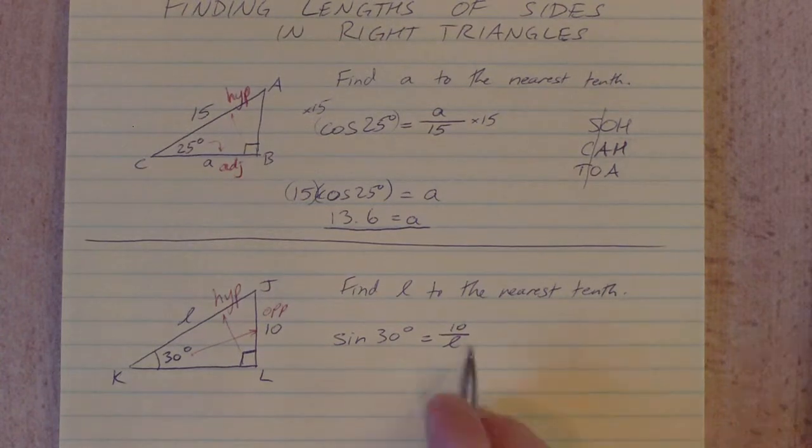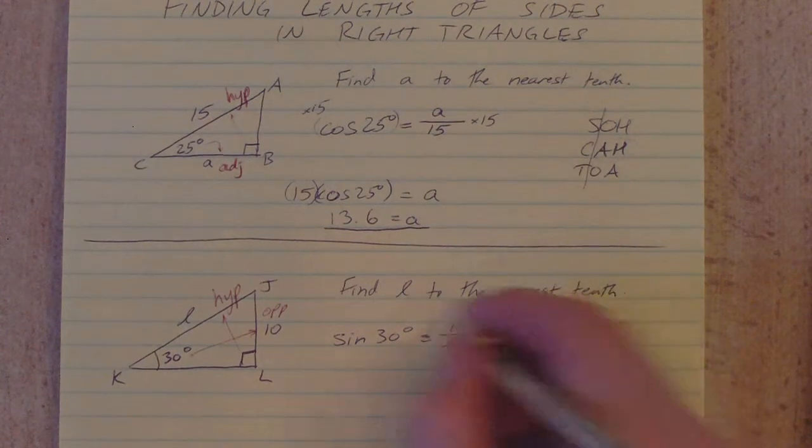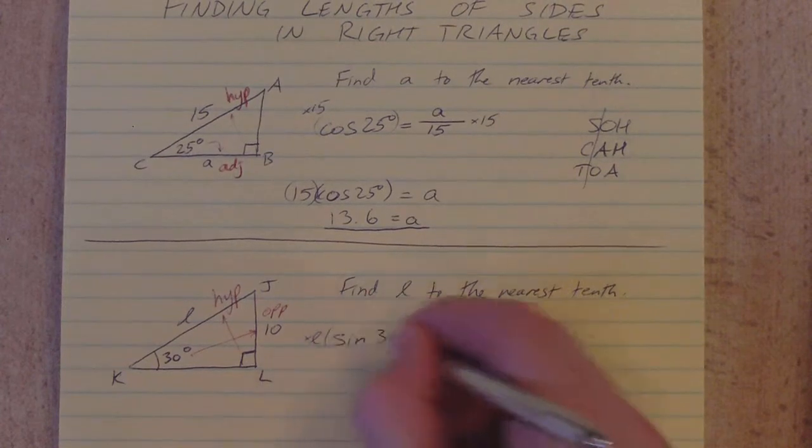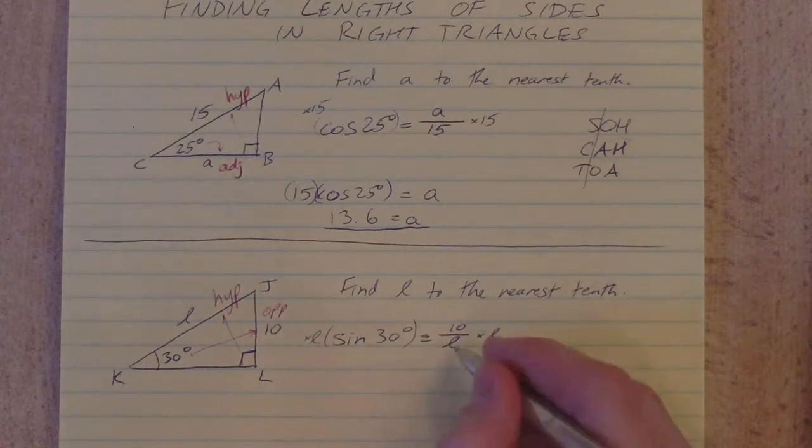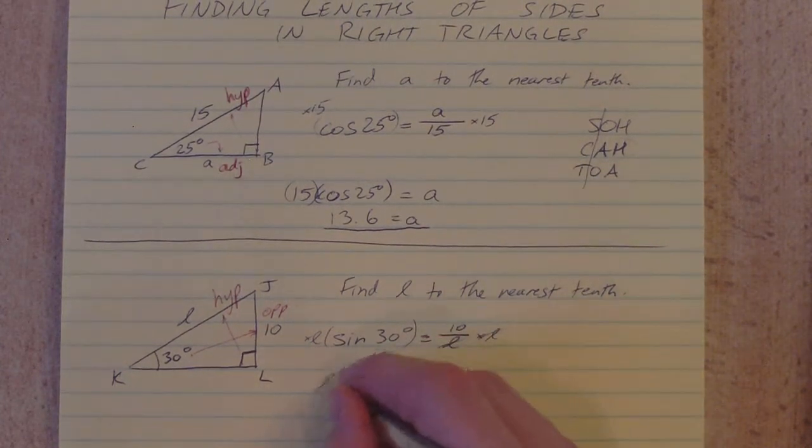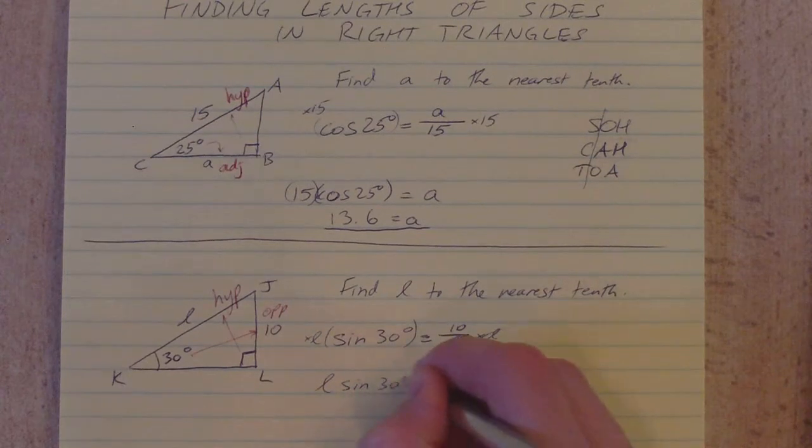Now I need to solve for little L. It's in the denominator here. I'm going to multiply both sides by little L. That's going to get rid of it on this side. All right. With L, sine 30 degrees equals 10.